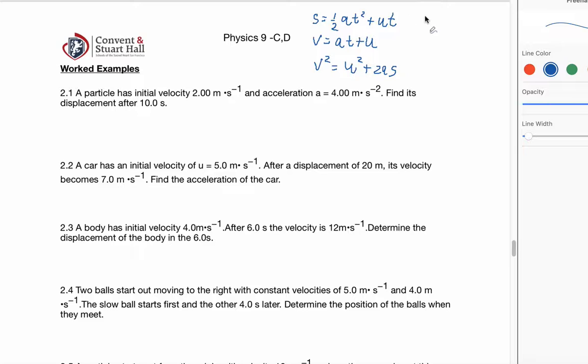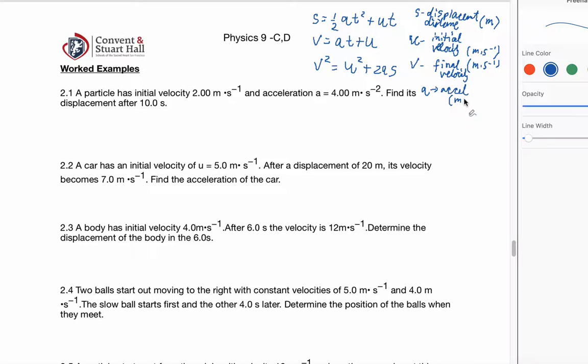And now let's just be clear on what each letter stands for and what the units are. S is displacement or distance, measured in meters. U is initial velocity, measured in meters per second. V is final velocity, also meters per second. We're going to have A, which is acceleration, measured in meters per second squared. And time T is measured in seconds.